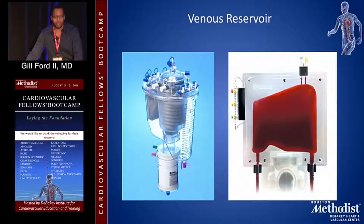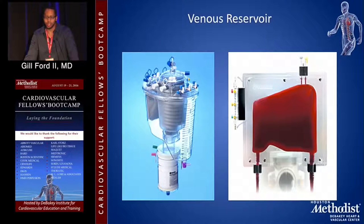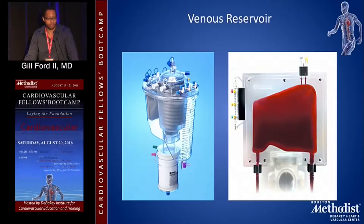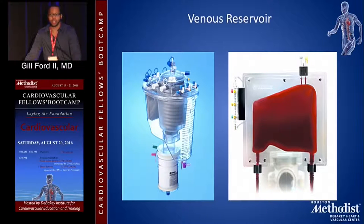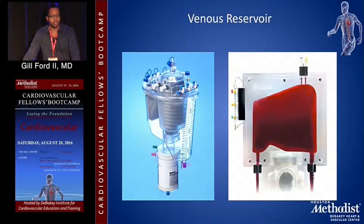After cannulating the patient, we connect using three-eighths inch or half-inch tubing. We drain the patient using either gravity or assisted venous drainage — either kinetic assist or vacuum — depending on the system used. Volume comes back into your venous reservoir, which essentially acts as the body of the patient, holding excess volume until we return it. You'll see both hard shell and soft shell reservoirs; the hard shell is most commonly used in most institutions.